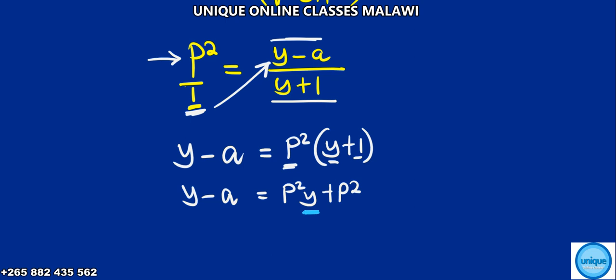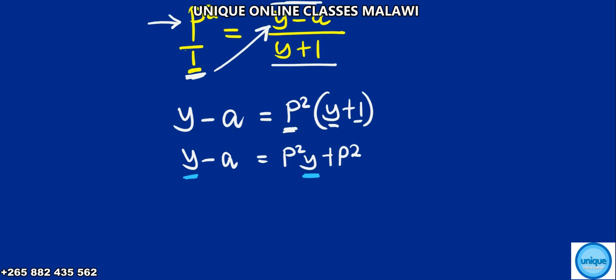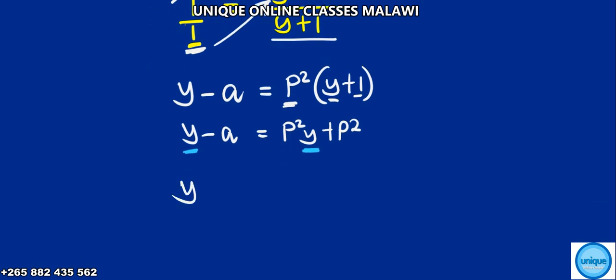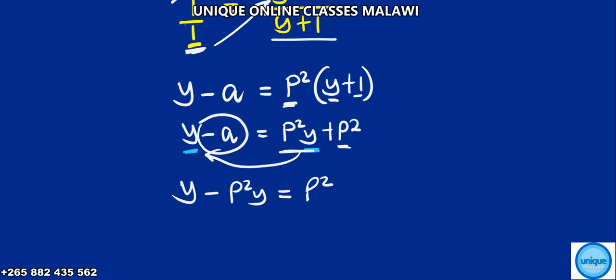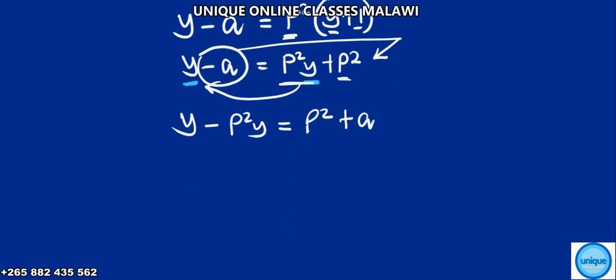Since we have been given y as the subject, we need to combine like terms. We're going to have fun y here — I would say — so I'm going to have a minus P squared y, then is equal to P squared. This a at this side, and only then can we make it positive, we're going to have a. So we need to factor out y.